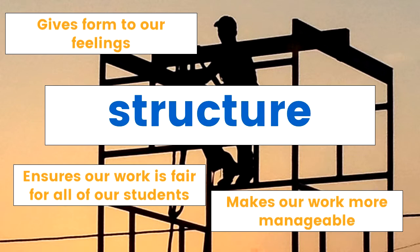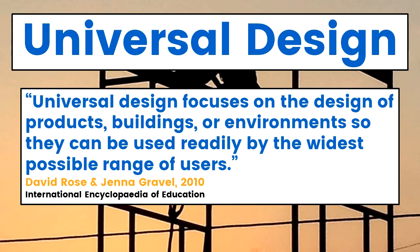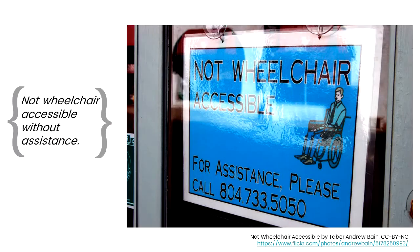It's not an accident that I use this image of a scaffold as my structure, because I'm going to talk a little bit about universal design, which started in architecture. The idea behind universal design is this focus on the design of products, buildings, and environments so that they can be used by the widest possible range of users. A really good example of this in architecture has to do with design for people in wheelchairs. This picture shows an accommodation that was added on after the building was built in response to the needs of people in wheelchairs.